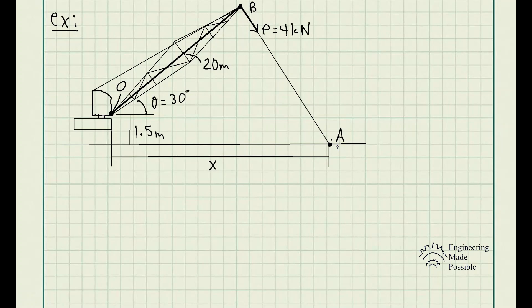determine the placement X of the hook at A so that this force P creates a maximum moment about point O. What is this moment?